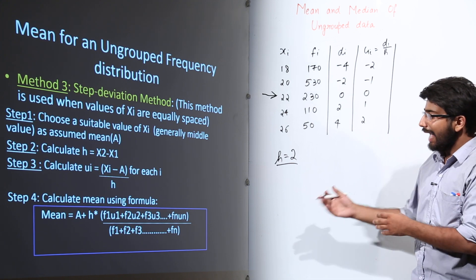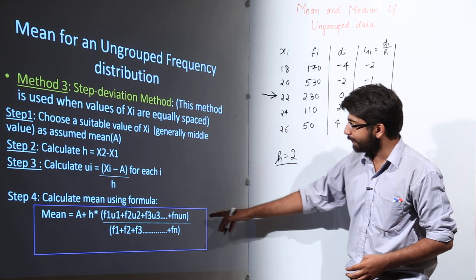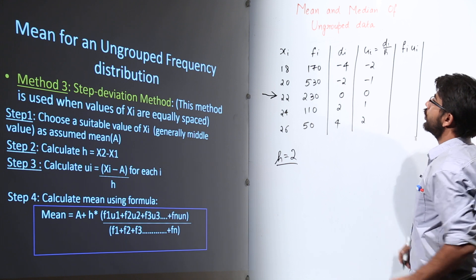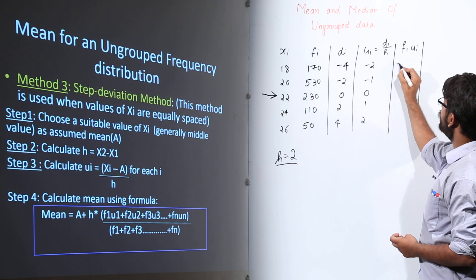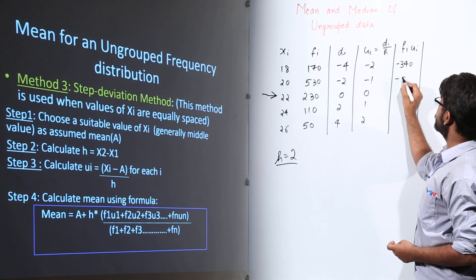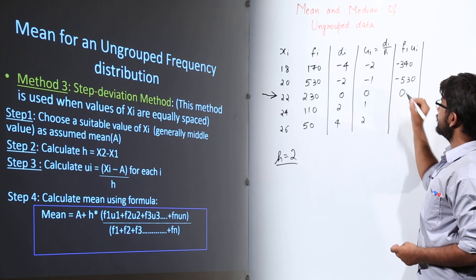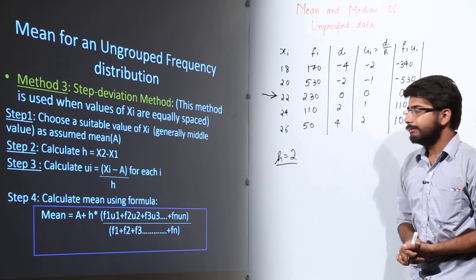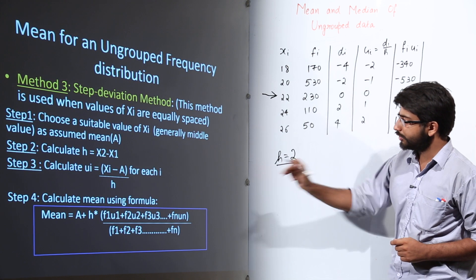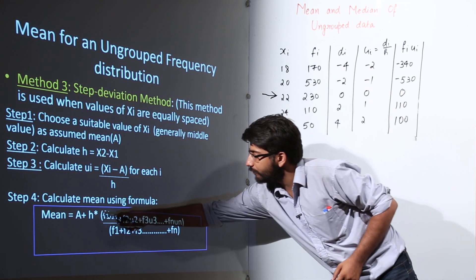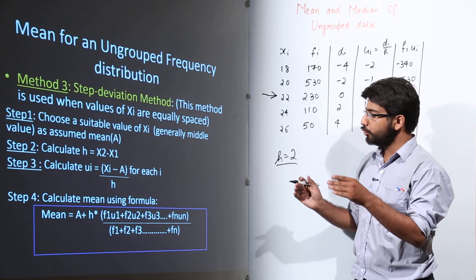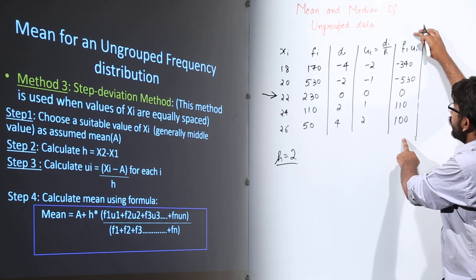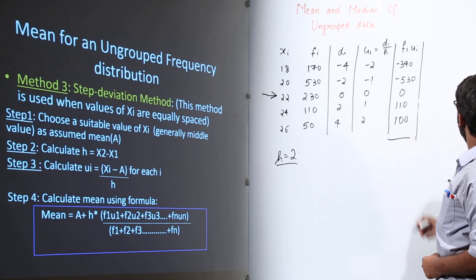Now calculate FI × UI for each row: 170 × (−2) = −340, 530 × (−1) = −530, 230 × 0 = 0, 110 × 1 = 110, and 50 × 2 = 100. We now have all the values needed, and the last step is to apply the formula: Mean = A + H × (Σ FI·UI / Σ FI).